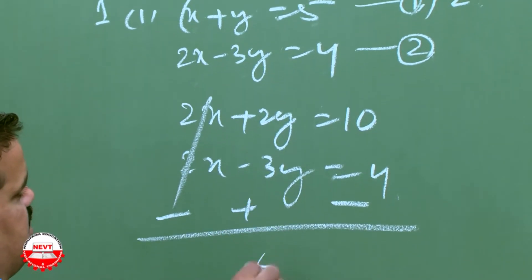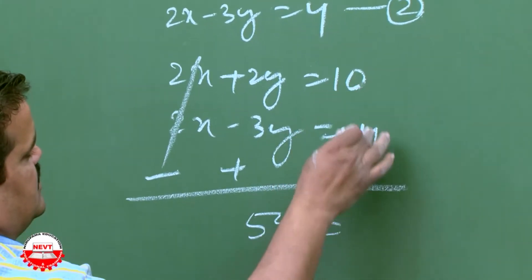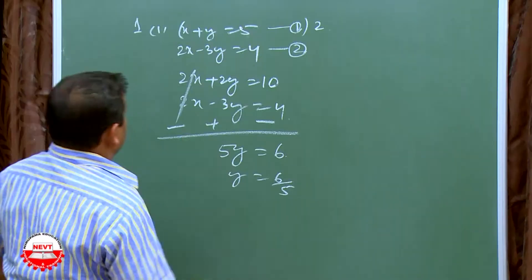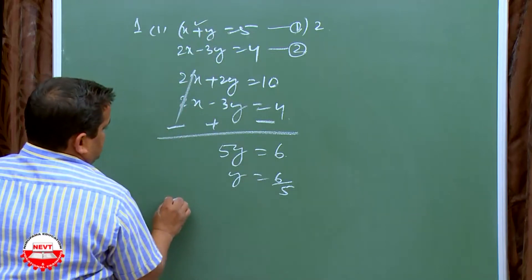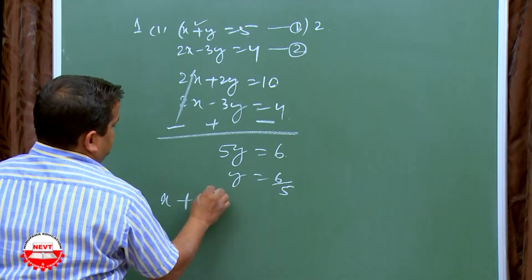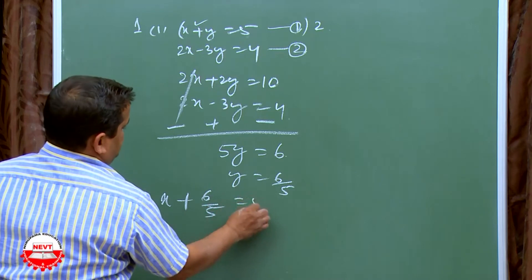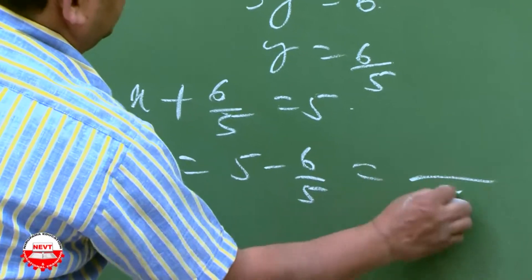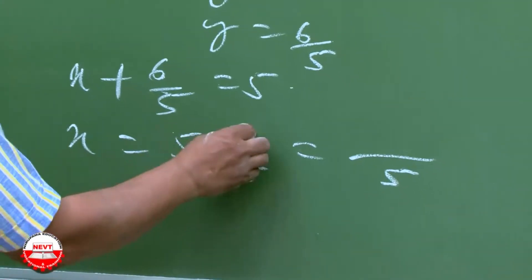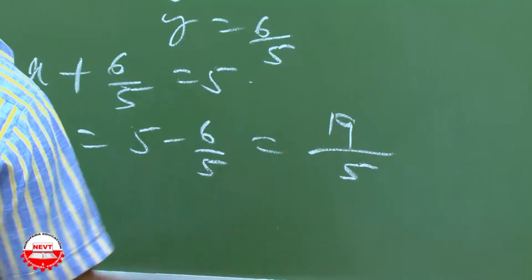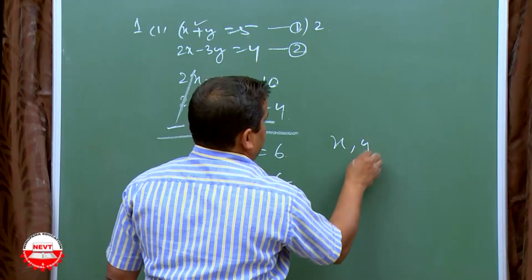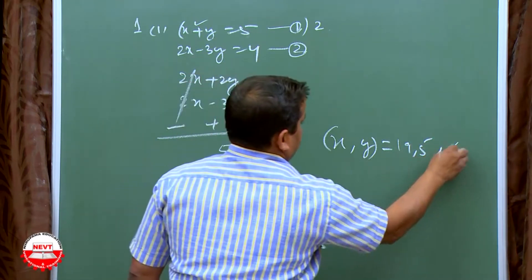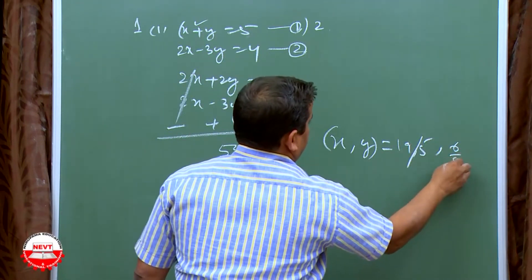After subtracting: 2Y plus 3Y gives 5Y equal to 10 minus 4, which is 6. So Y is equal to 6 by 5. Substituting back into equation 1: X plus 6 by 5 equals 5, so X equals 5 minus 6 by 5, which is 45 minus 6 by 5, equal to 19 by 5. Therefore X comma Y is equal to 19 by 5 comma 6 by 5.